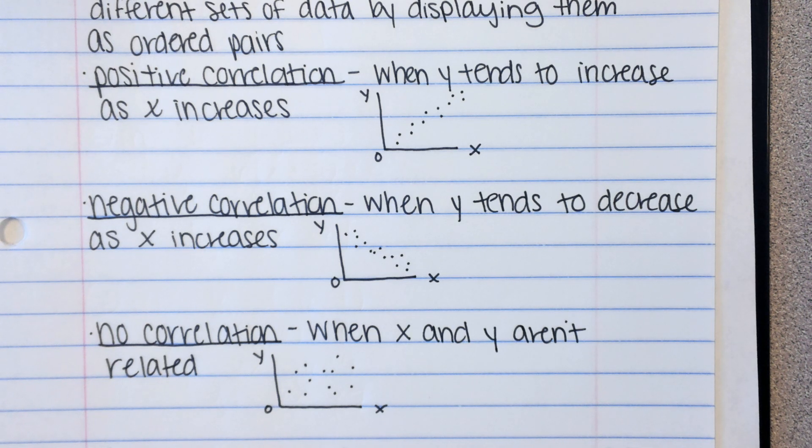A negative correlation might be as temperatures increase, less people buy winter coats. Okay, that would make sense. And then a no correlation might be the number of tennis shoes sold and ice cream sales. Ice cream sales and tennis shoes are probably not going to have any correlation. They're not really related. So there are three scenario examples, and you're going to have to read some and make some decisions for yourself.